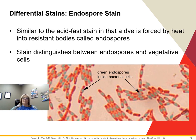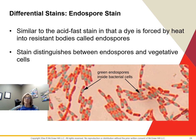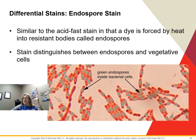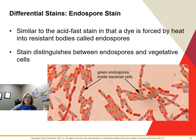The endospore stain is similar to an acid-fast stain in that dye is forced by heat into bodies that normally won't stain — called endospores. It distinguishes between endospores and vegetative cells, where vegetative means metabolically active. This is really important for identifying gram-positive spore-forming members of Bacillus and Clostridium, and helps determine virulence and species identification.